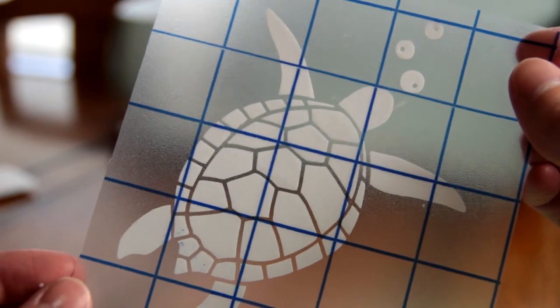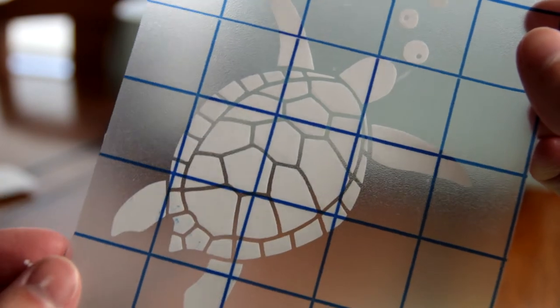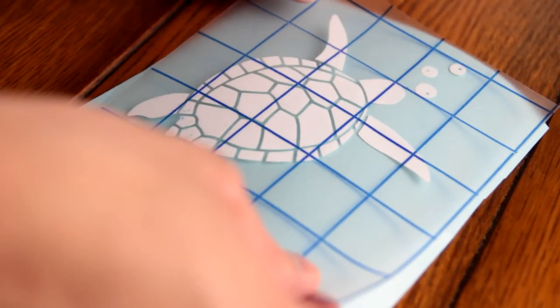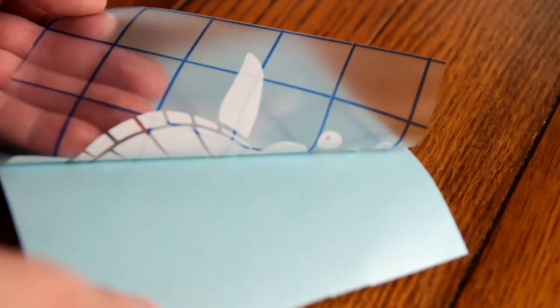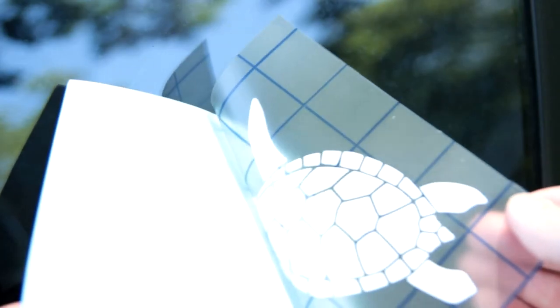And here is the completed decal. You can either leave it on the transfer paper or you can reapply it if you'd like to sell these or use them later. I'm going to apply mine to a car window. So I'm going to make sure that I clean the surface really well, make sure that it's dry and free of debris.